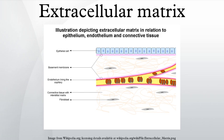Binding to integrins unfolds fibronectin molecules, allowing them to form dimers so that they can function properly. Fibronectins also help at the site of tissue injury by binding to platelets during blood clotting and facilitating cell movement to the affected area during wound healing.